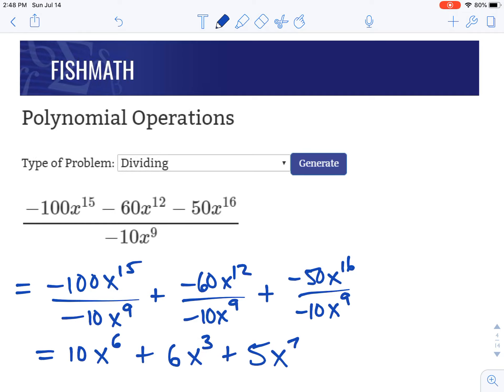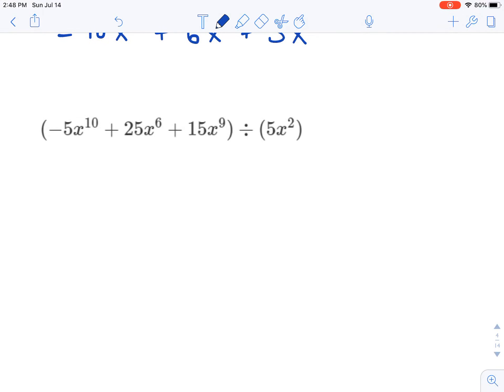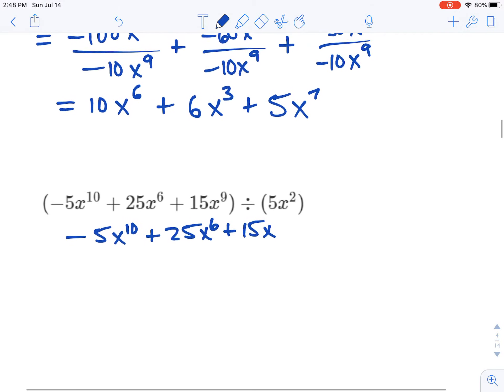If it's not written like a fraction, we're going to make it like a fraction. We're going to do the same thing here. We're going to take the first thing in parentheses, and we're going to make it the numerator. And we're going to divide this whole thing by the 5x squared.